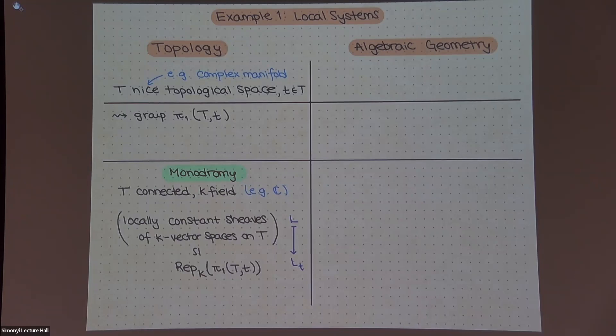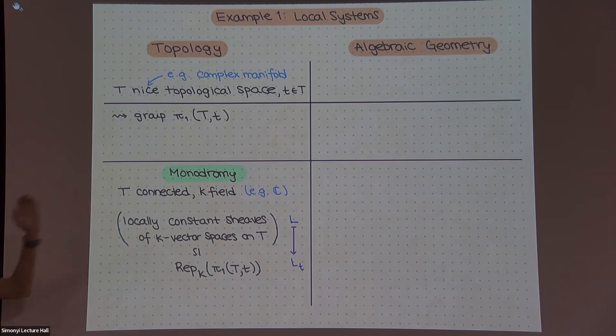So if you don't like locally constant sheaves, think about the T being a complex manifold and the field being C. And then this is saying that vector bundles with a flat connection are the same as representations of π₁. And how this works is, well, you take your local system or vector bundle, you take the stalk or fiber at a point and using basically parallel transport, you have an action of π₁.